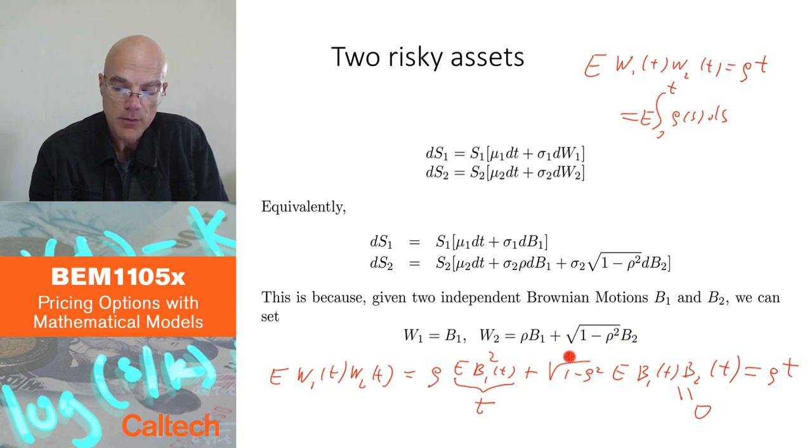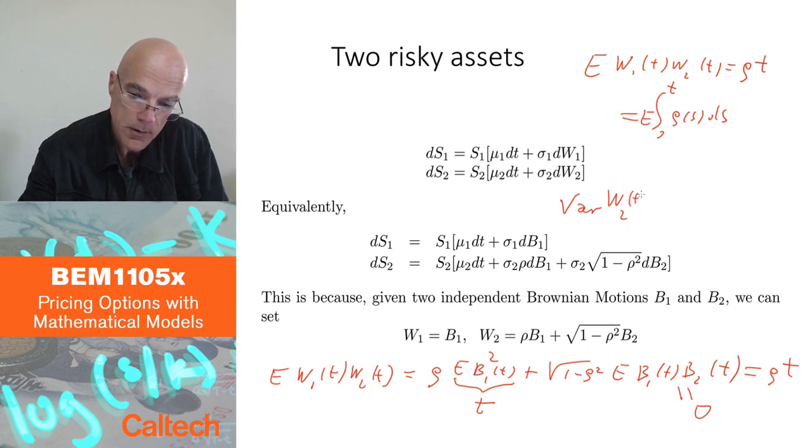So the only remaining thing is to find the variance, but that's a similar computation as here. Since these two guys are independent, the variance is going to be the sum of the variances. So variance of w2 of t is going to be, with variance, that all goes out as a square, rho squared variance of b1 plus this square root squared is going to be 1 minus rho squared variance of b2 of t.